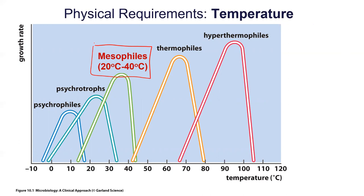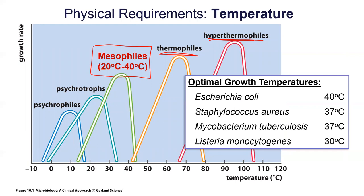There are terms for organisms that like warmer temperatures, such as thermophiles or hyperthermophiles, and for cooler organisms, psychrotrophs or psychrophiles. Staphylococcus aureus lives on humans, so it's no surprise its optimal temperature is 37 degrees. Mycobacterium tuberculosis, which causes tuberculosis, is also a human pathogen and also happiest at 37 degrees. E. coli has an optimal temperature of 40 degrees Celsius — interestingly, E. coli doesn't just live in mammals but also in birds, which have higher body temperatures, so 40 degrees makes sense.